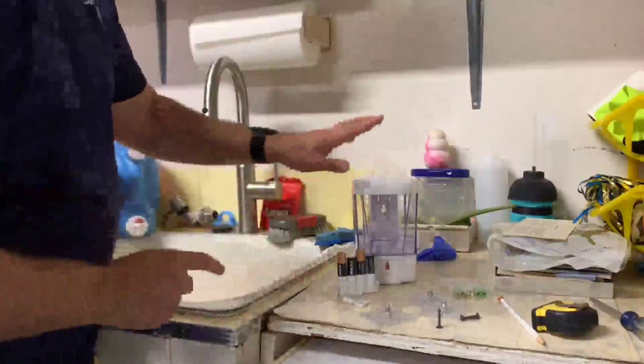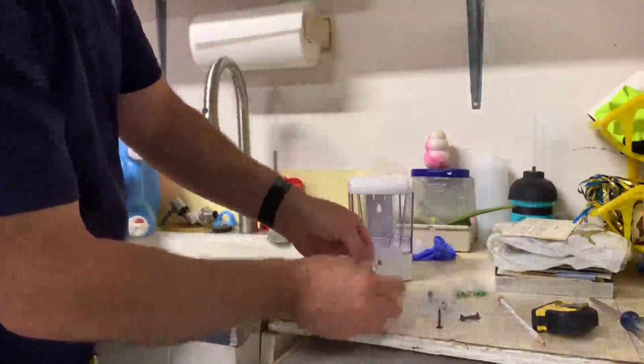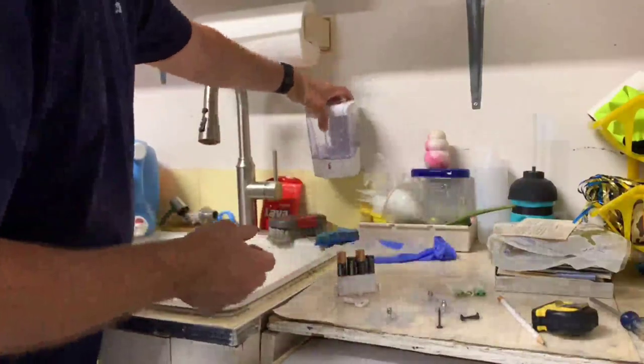All right, I got this automatic battery-operated soap dispenser. It does come with these sticky-on type of hooks where you could actually just hook them on the back and then stick it on the wall.